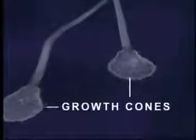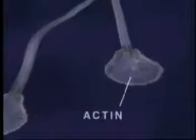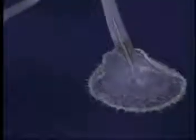Two principal proteins involved in growth cone function are actin, which is responsible for the pulsating motion seen here, and tubulin, a major structural component of the neurite membrane. During normal cell growth, tubulin molecules link together end-to-end to form microtubules, which surround neurofibrils, another structural protein component of the neuronal axon.